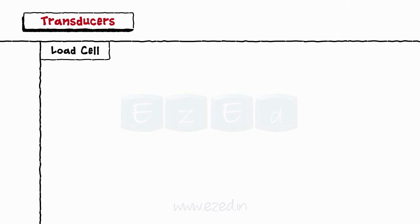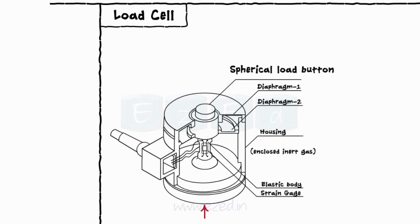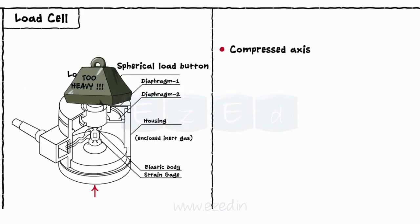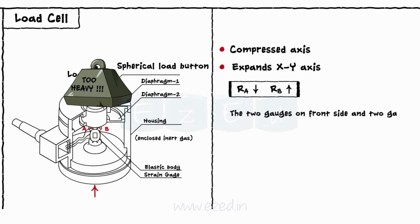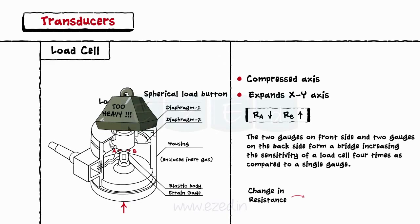The next type of transducer is a load cell transducer. As the name suggests, a load cell is used for weighing extremely heavy loads. Load cell uses a strain gauge for measuring the weights. The weight or load is applied along the direction shown by the arrow. Due to the stress of the load, the steel bar gets compressed along the vertical axis and expands along the XY axis. Due to this, the resistance of strain gauge A will decrease and resistance of strain gauge B will increase. The two gauges on the front side and two gauges on the back side form a bridge, increasing the sensitivity of the load cell four times compared to a single gauge. Change in resistance of the strain gauge produces the required output signal and correspondingly determines the weight of the load.